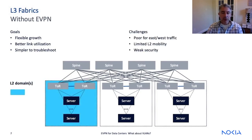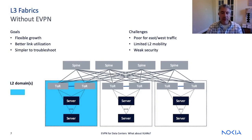In a pure Layer 3 fabric, the Layer 2 domains are now quite small, usually confined to a rack. And in many situations, this creates issues with Layer 2 communication and host mobility. For redundancy, we're still using an MLAG implementation provided by our vendor. Routing is all done in a single routing table, so there's still little tenant separation for routed traffic.